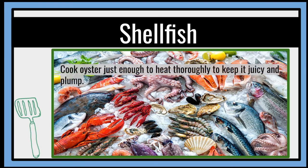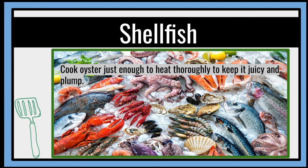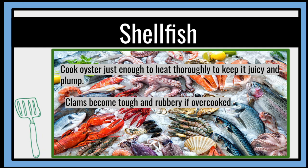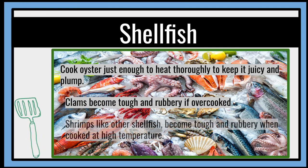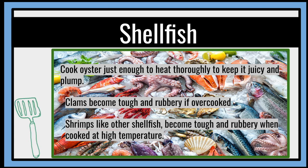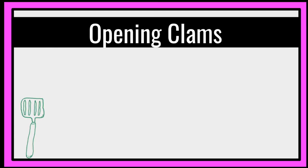For shellfish, cook oysters just enough to heat thoroughly to keep them juicy and plump. Clams become tough and rubbery if overcooked. Shrimps, like other shellfish, become tough and rubbery when cooked at high temperature.